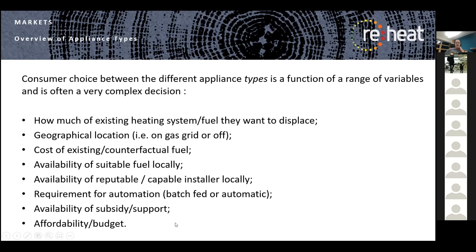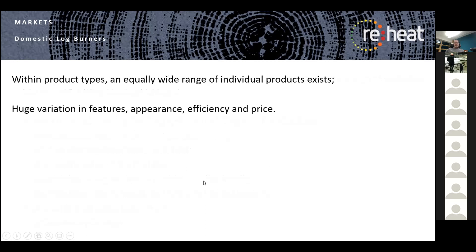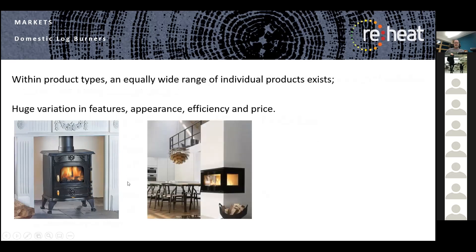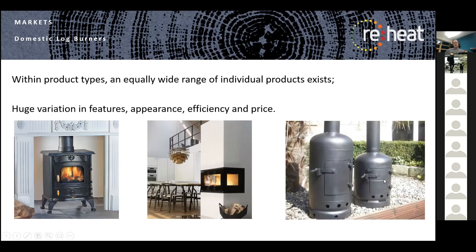Wood burning stoves need fuel below 20% moisture content. They can burn clean dry waste wood such as pallets, cable drums, and packaging — as long as they're not made of composite materials. The biggest stoves reach about 40 kilowatts, but typically you're looking at 3.5 to 5 kilowatt units. The most efficient models reach around 80% efficiency. There are around one and a half million installed in the UK — a big, well-established market across rural Britain and into towns and cities.